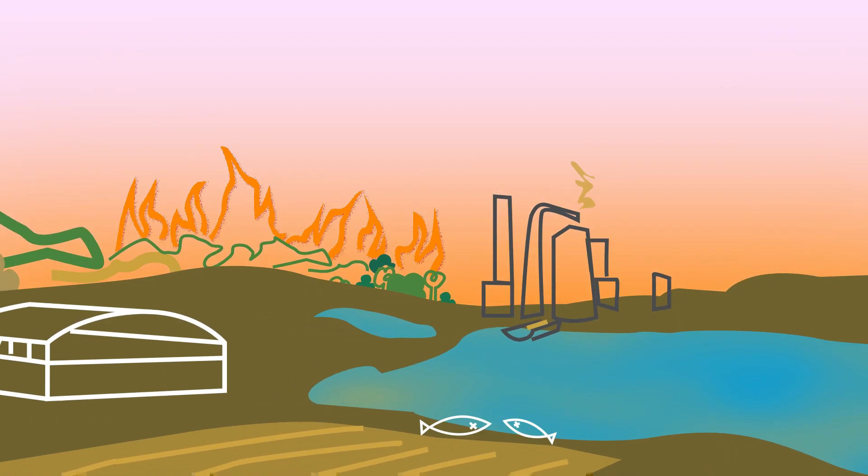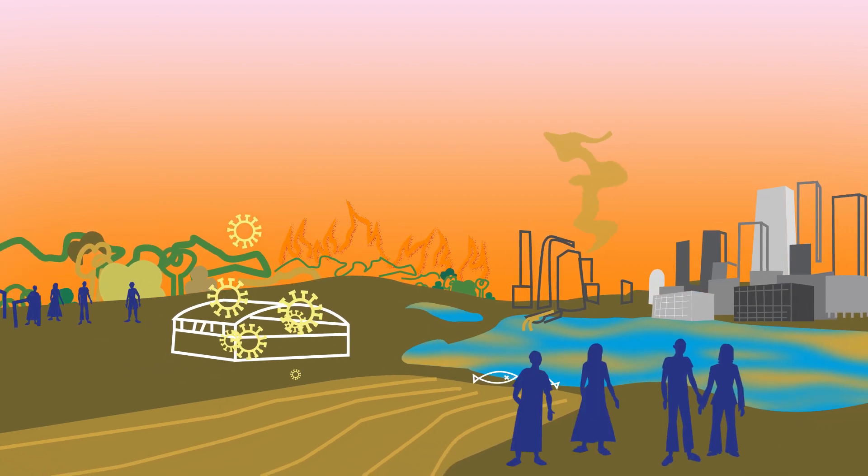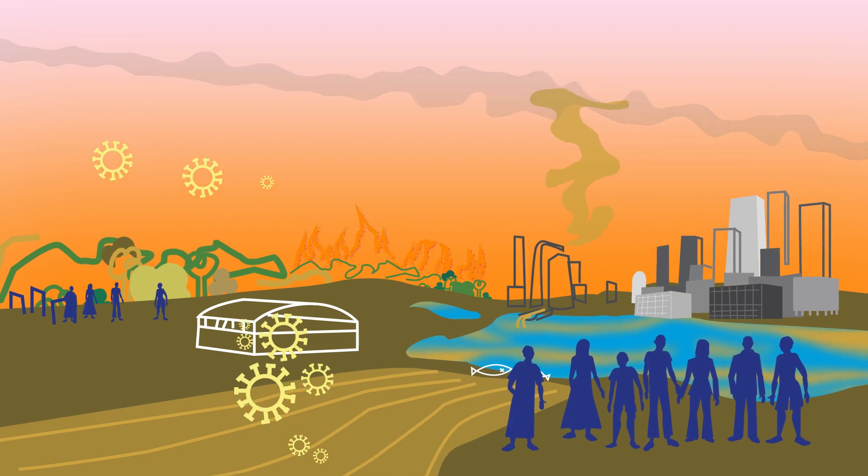Climate change, ecosystem fragility, disease outbreaks, urbanization, mass displacement and geopolitical instability all interact with each other.